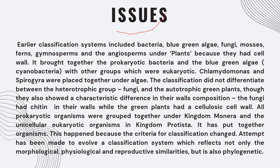Now, what were the issues with the earlier classification system? The earlier system included bacteria, blue-green algae, fungi, mosses, ferns, gymnosperms, and angiosperms all under plants.